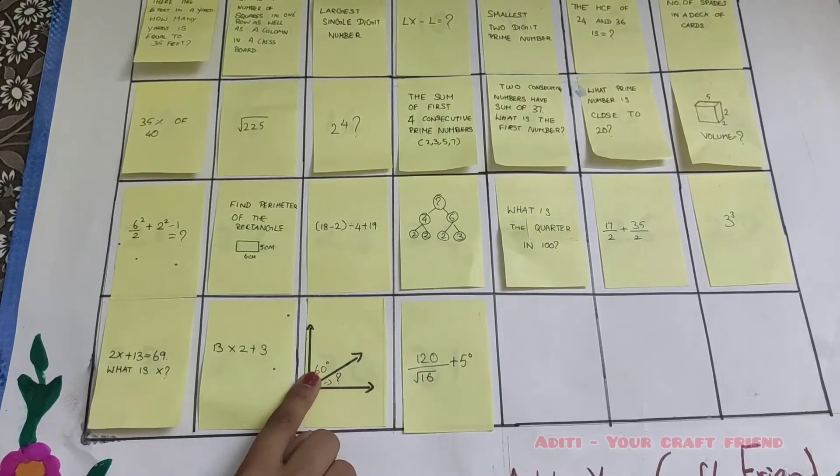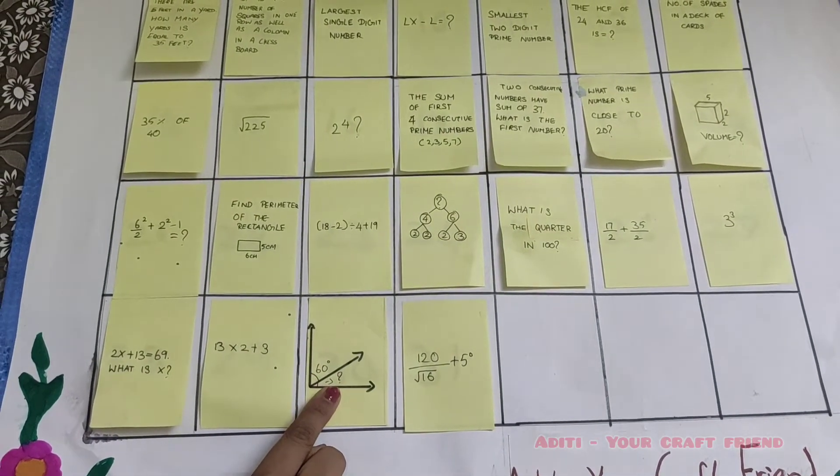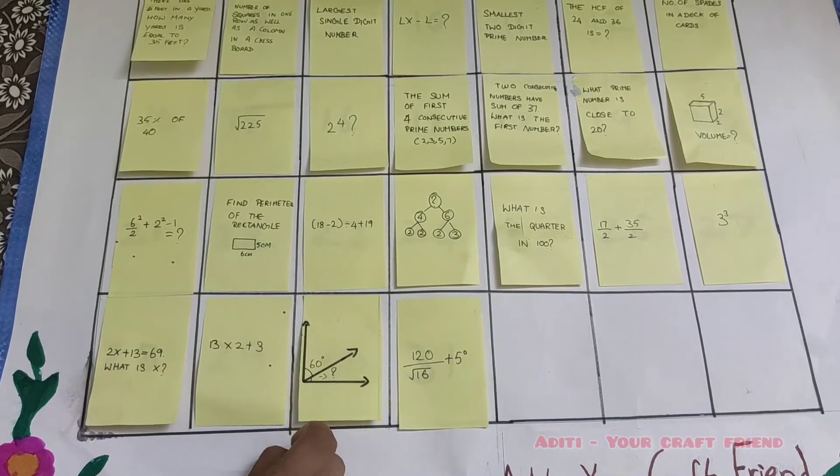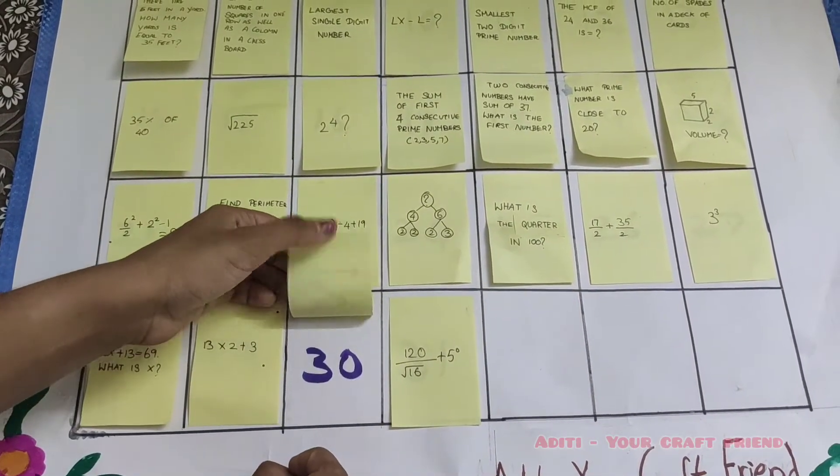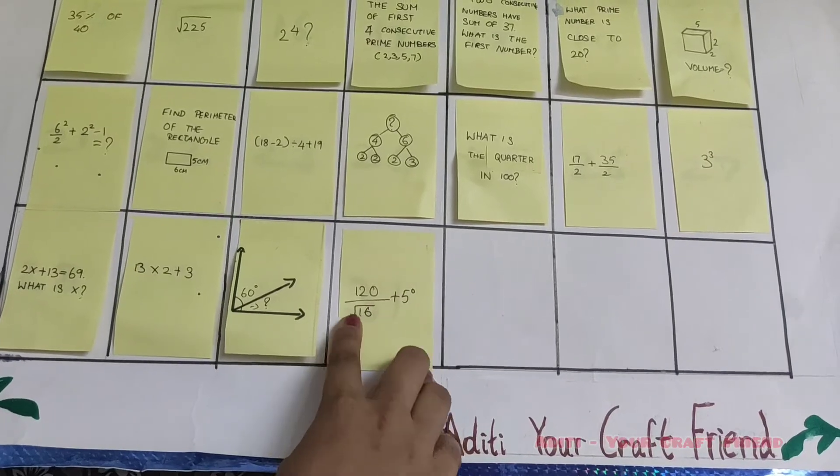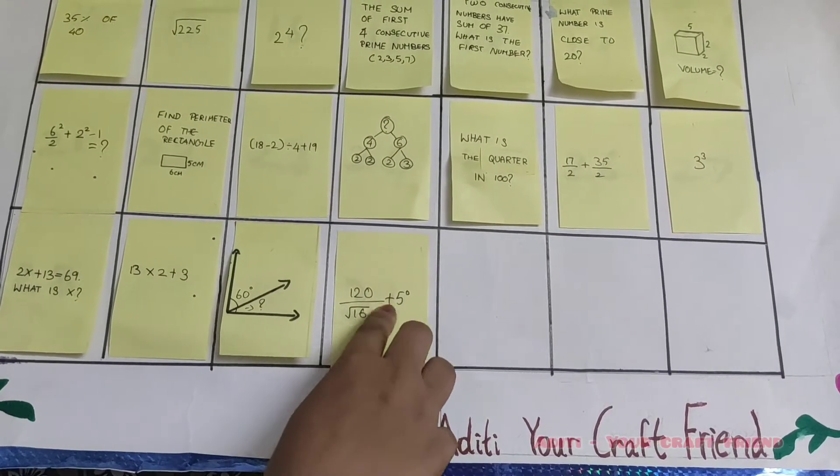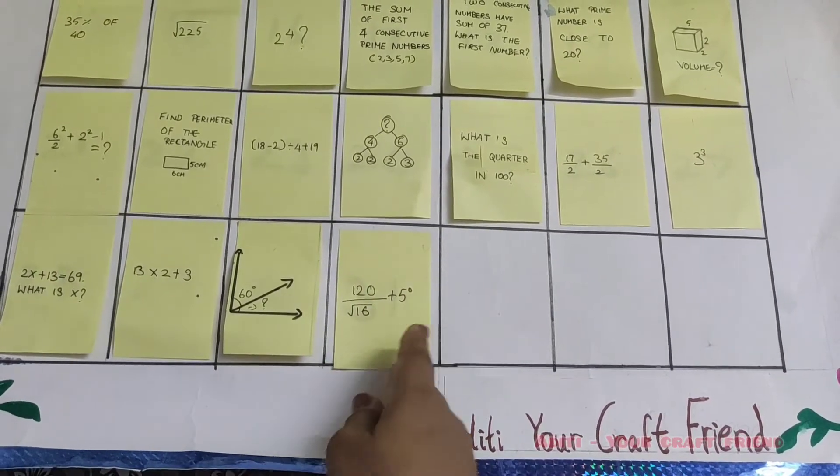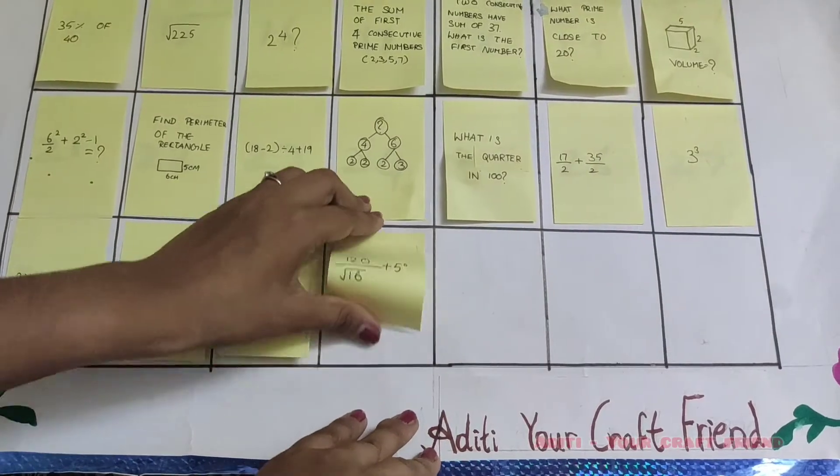In this angle, this part is 60 degrees. What is this part of this angle? Yes, it's 30 degrees. 120 by square root of 16 plus 5 power 0. What is the answer? Yes, it's 31.